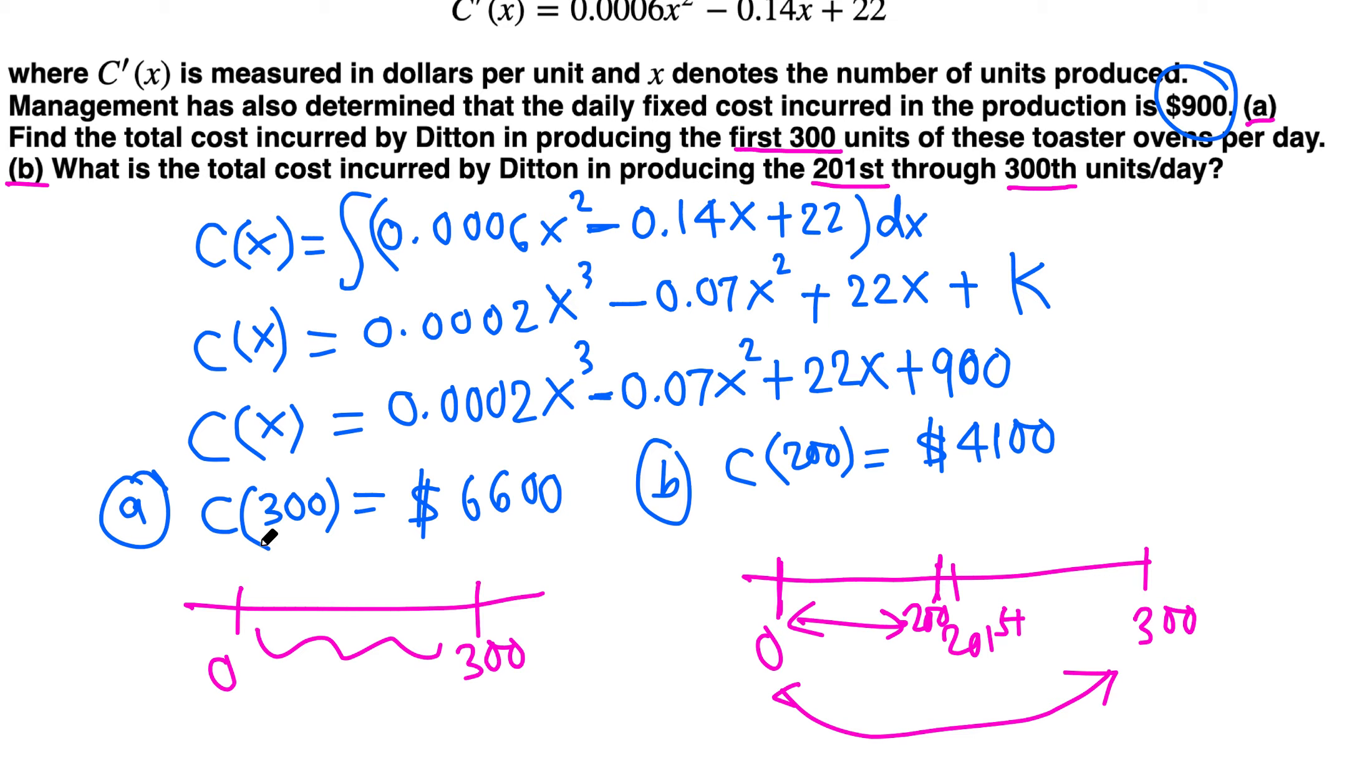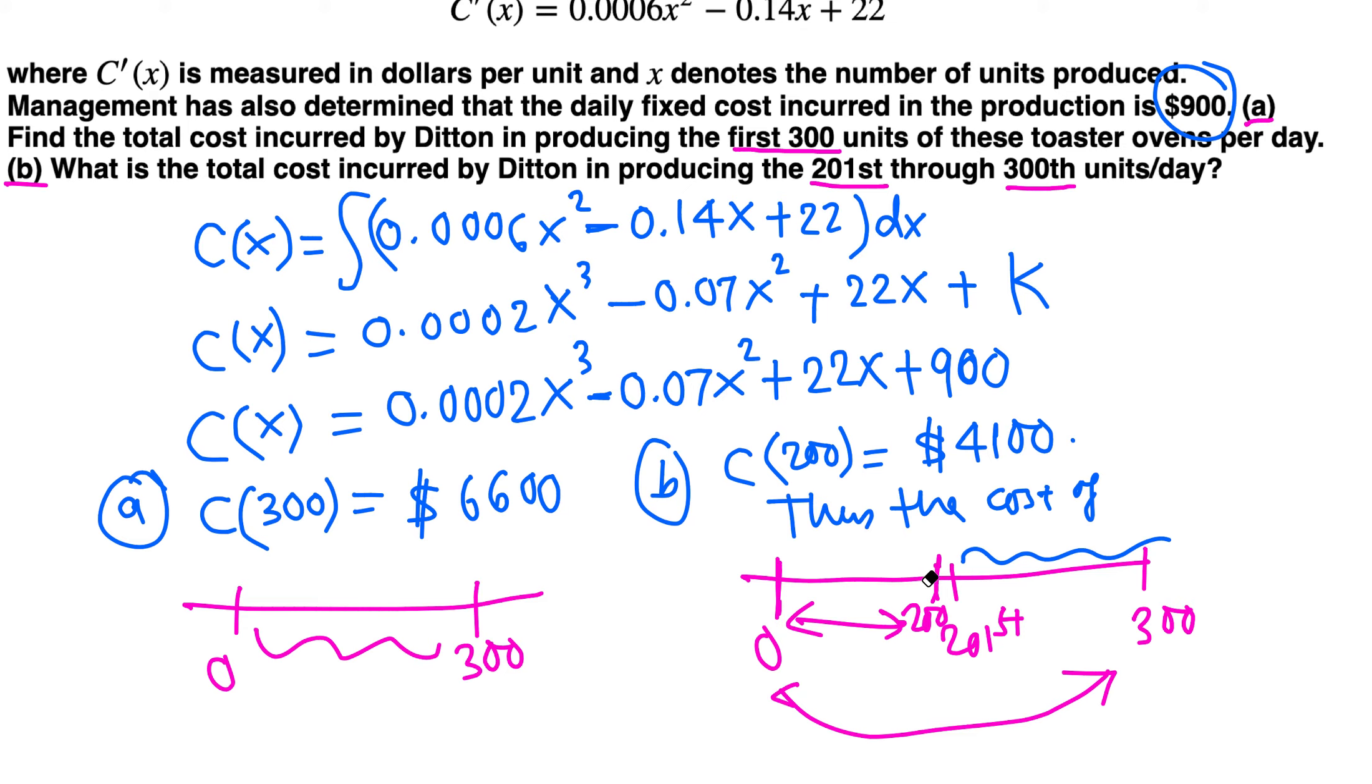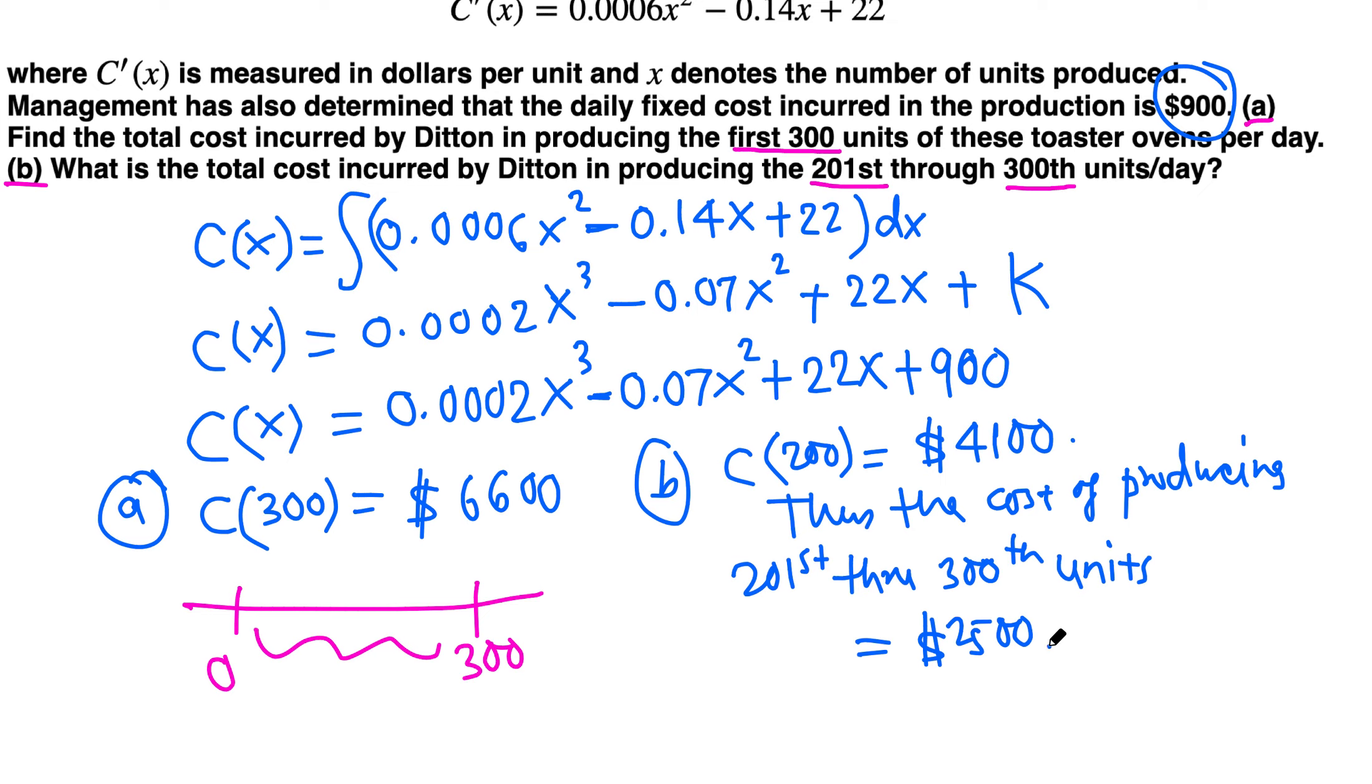Part a is the cost of producing 300 units. Now we subtract this from that and we get the answer. The cost of producing 201st through 300th units is $6,600 minus $4,100, and that gives $2,500 final answer.